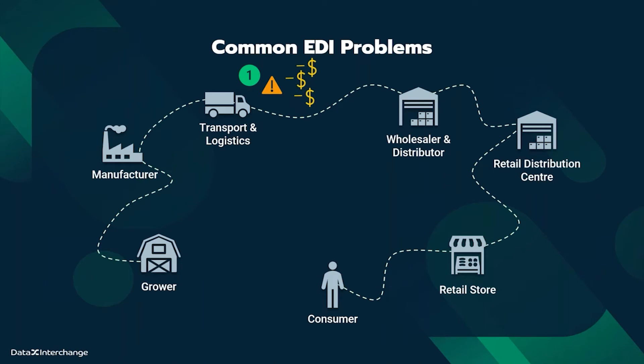Let's look at common EDI problems and what they are. A possible EDI problem could be a delay or error — for example, incorrect data or wrongly formatted documents, which means the trading partner's system cannot understand or import the message. This could then incur fines or chargebacks from customers and trading partners.